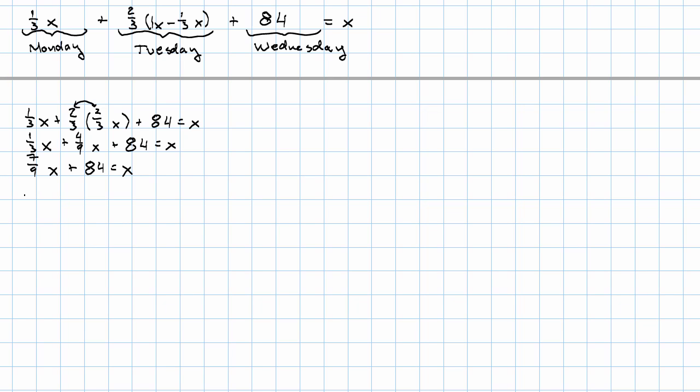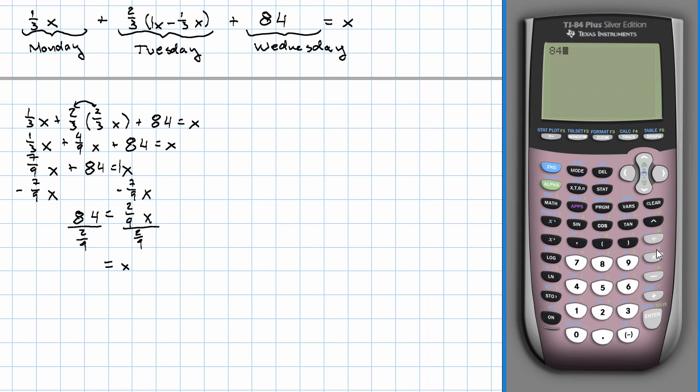Now we want to get rid of that x term on the left. So we'll subtract seven-ninths x from both sides, subtracting because we're getting rid of a term. On the left, we've got 84. On the right, we have one-x minus seven-ninths x, which is two-ninths x. Again, you can use your calculator for that if you'd like. And finally, we'll divide both sides by two-ninths, and we get 84 divided by two-ninths is 378.